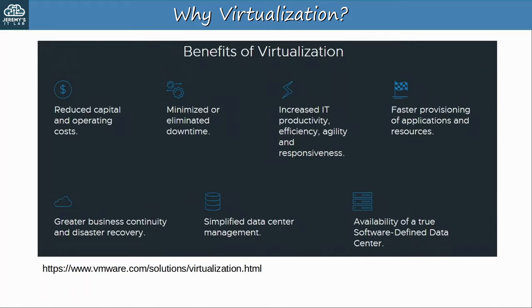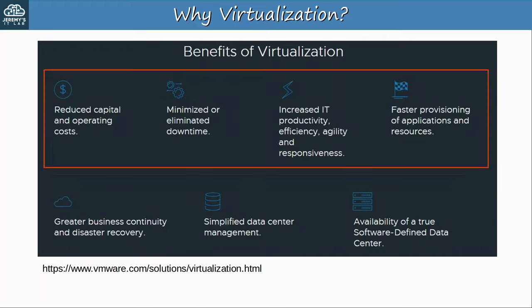Virtualization provides reduced capital costs because you need fewer physical servers, as well as reduced operating costs because fewer physical servers means less space, power, and cooling is needed. VMs also require less work to set up, which is another reduction in operating costs. Downtime can be reduced or eliminated because it's easy to deploy a VM to multiple physical servers for redundancy. VMs also provide increased productivity, efficiency, agility, and responsiveness. VMs are definitely more efficient and agile compared to traditional physical-only servers.